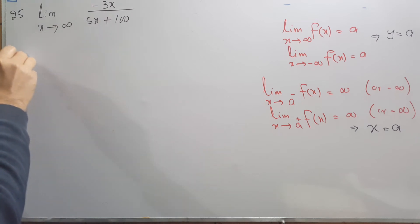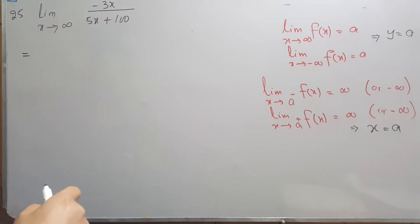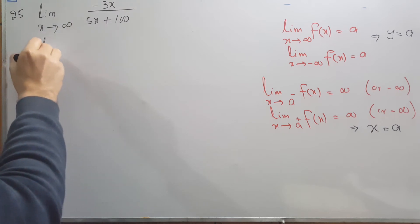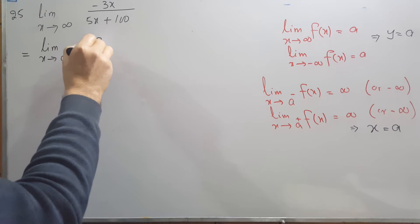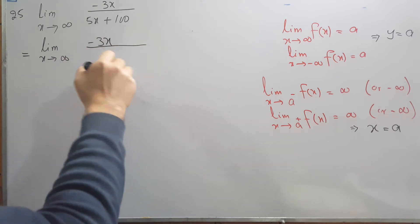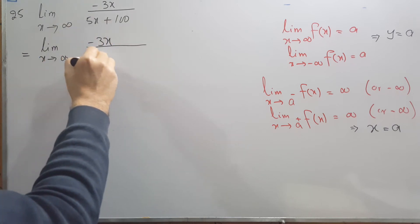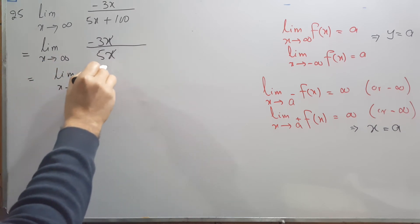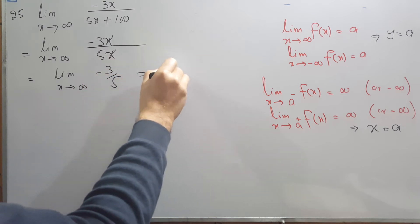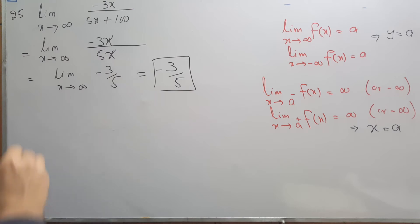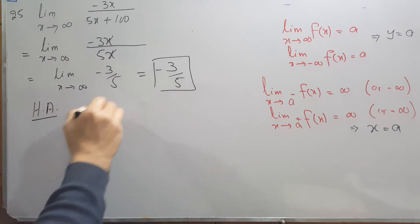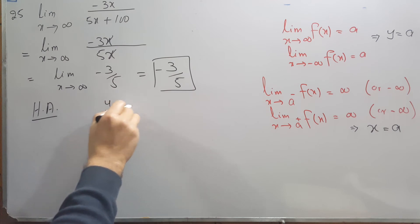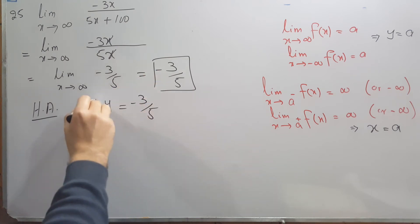For the next problem, we again apply the highest-power method. The numerator is just -3x (no terms to delete), and the denominator has 5x plus 100, so we keep only 5x. The x cancels with x, leaving -3/5. So the limit is -3/5, and the horizontal asymptote is y = -3/5.